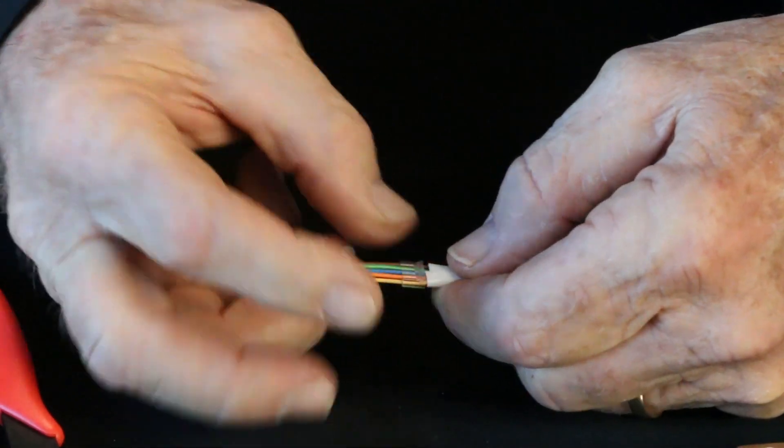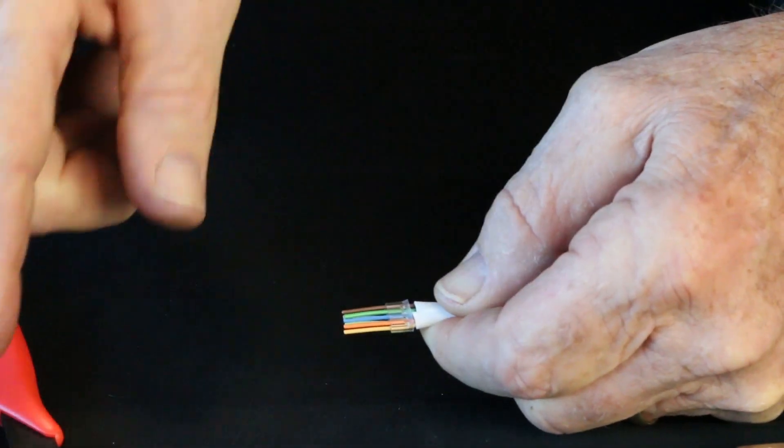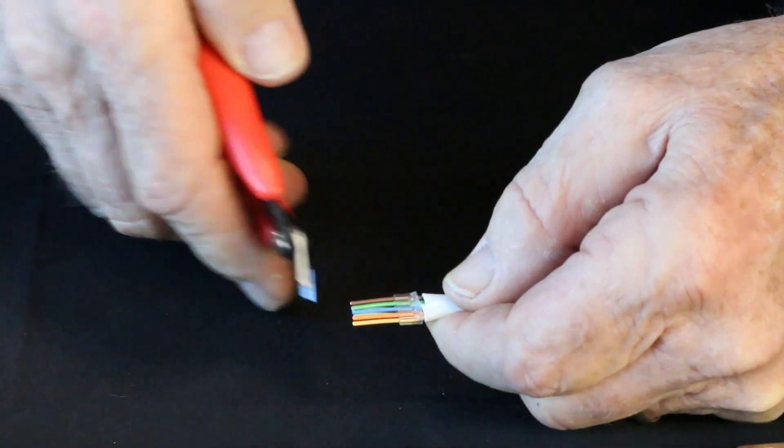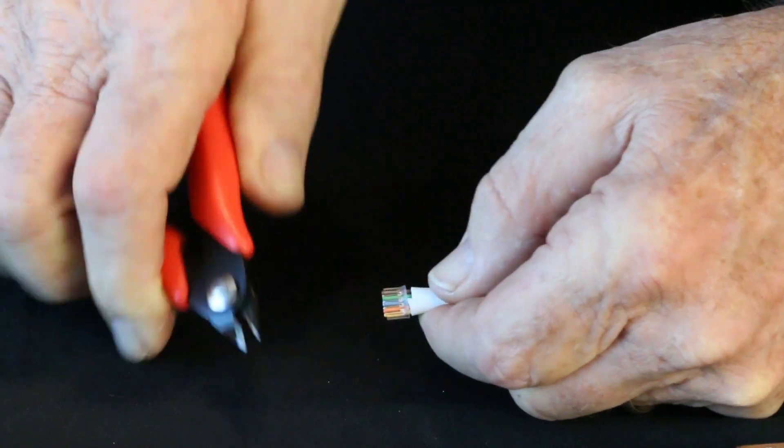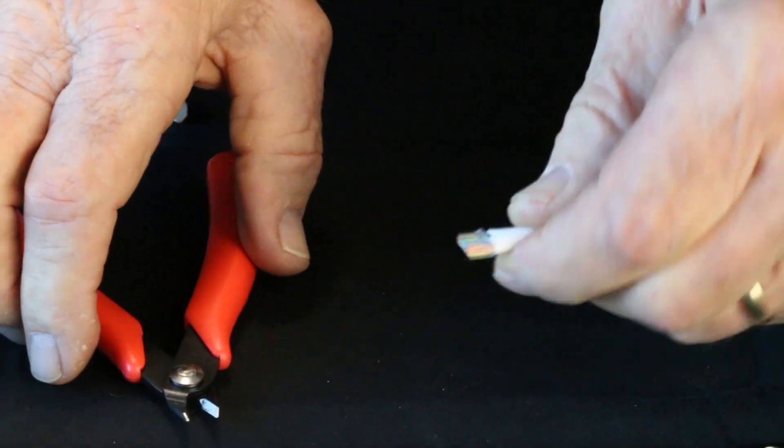And then we're going to slide this bar all the way down to the jacket. Once it's at the jacket, make sure it's square. Then we take our flush cutter and we put it right in front of the bar. And there's your prep. So, that's what it looks like.